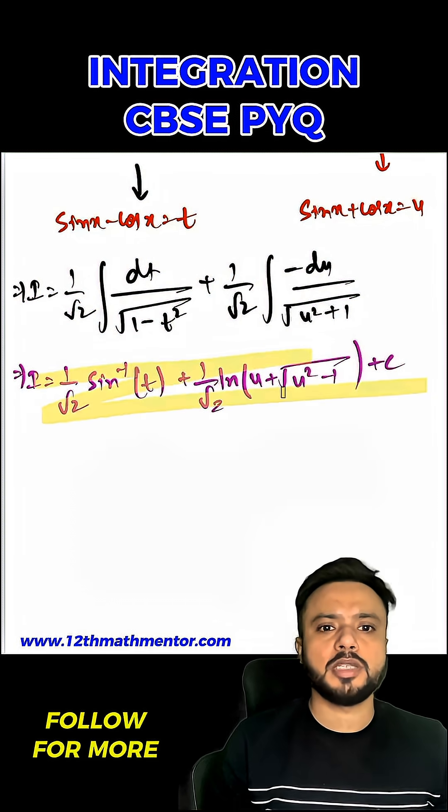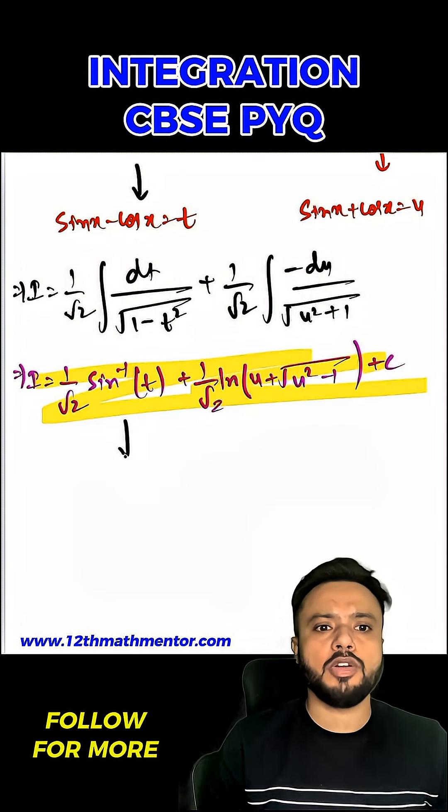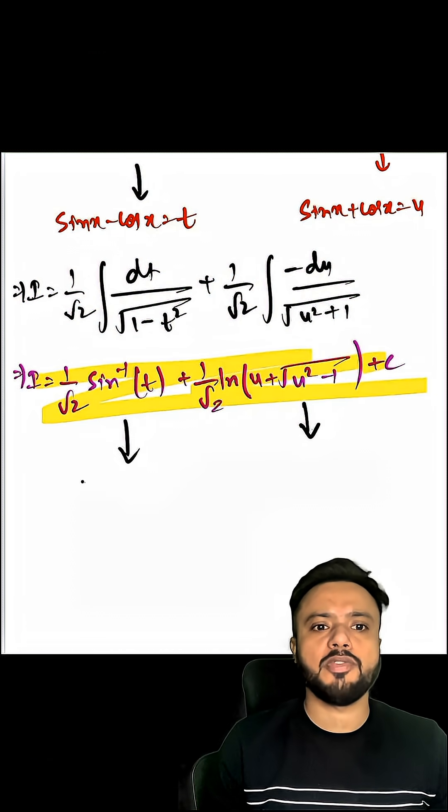So after using the formula we will get this particular thing, and then you have to substitute the value of t and substitute the value of u here and you will get the final answer.